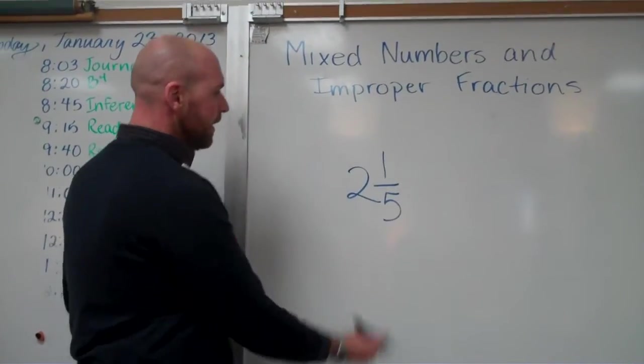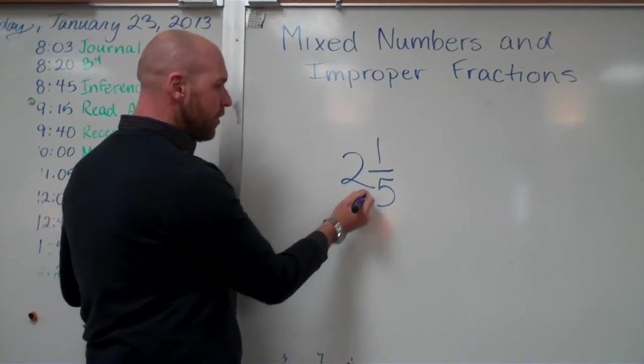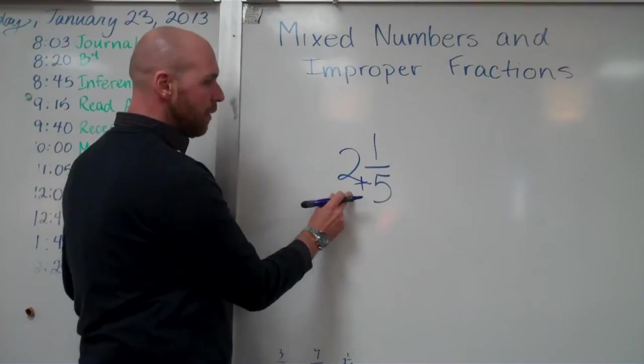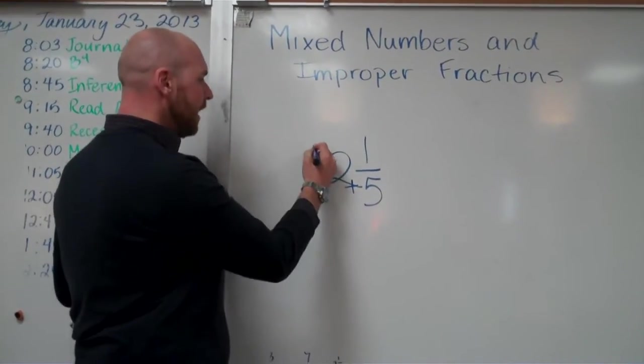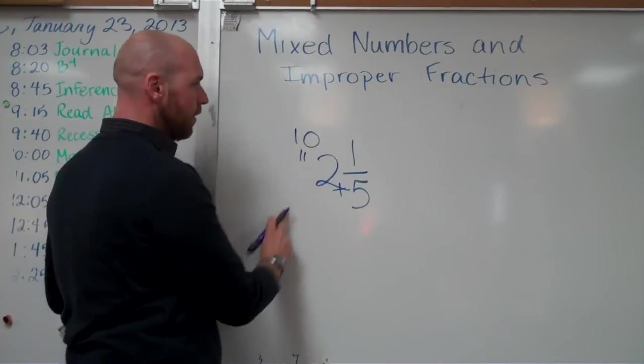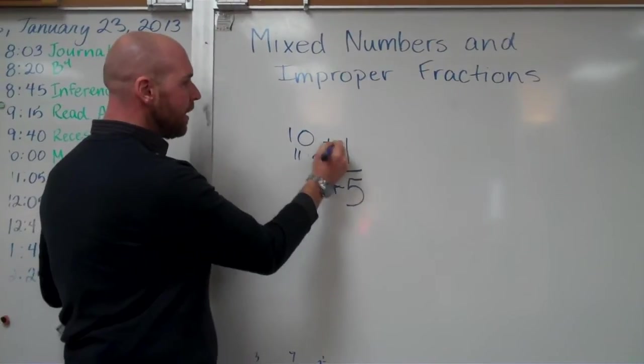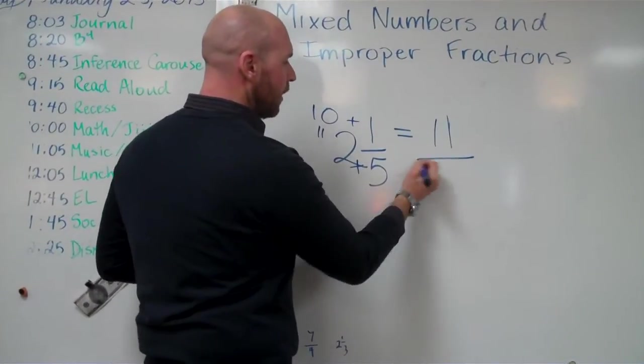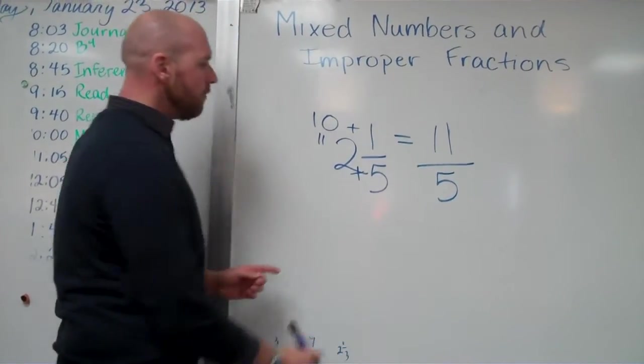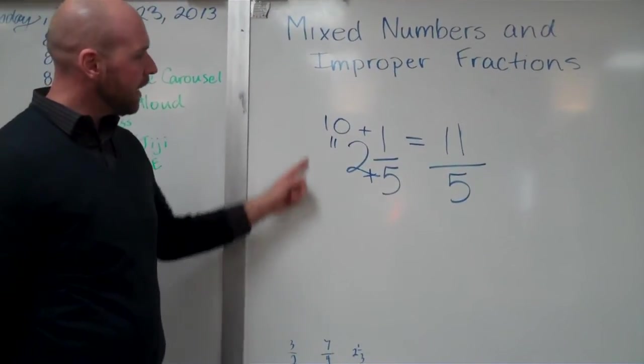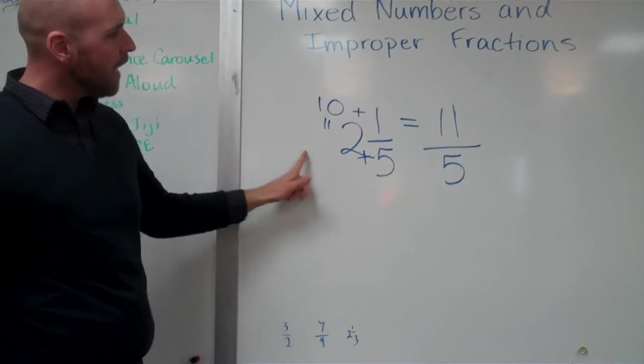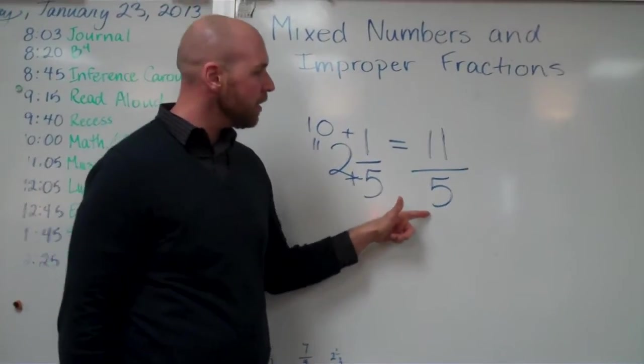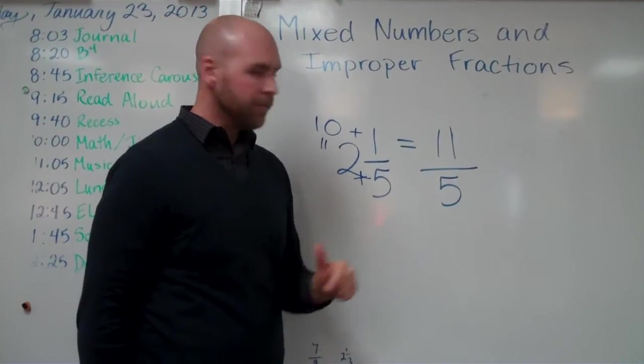So all I have to do, watch carefully, is I take five times two, five times two, I'm kind of working backwards I know, equals ten. Ten plus one equals eleven. Your denominator stays the same. So I've just taken two and one fifths and I've made it into an improper fraction, eleven fifths.